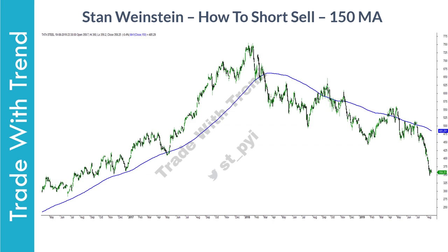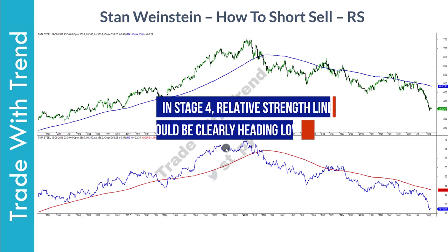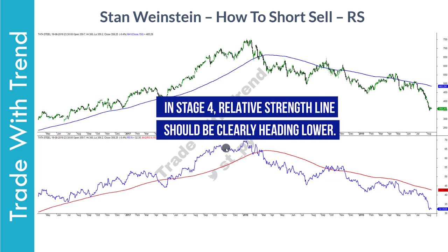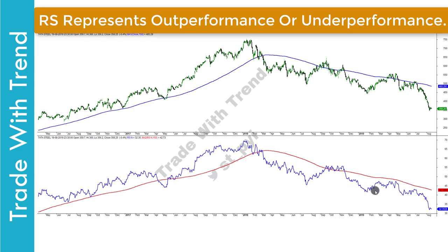Let me now move to relative strength conditions that we have to follow for this short selling strategy. In the lower panel of this chart, this is the relative strength RS indicator. Do note that RS is completely different than the RSI indicator. The code for the RS indicator for TradingView.com is given in the comment section below. Now while short selling stocks, Stan Weinstein clearly states that the relative strength RS indicator should be moving lower.